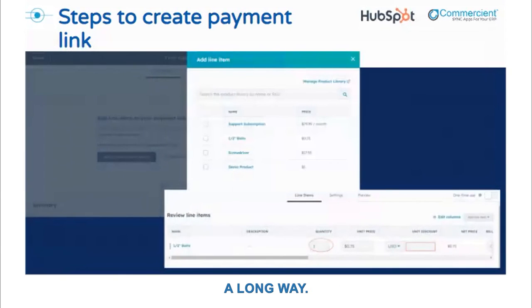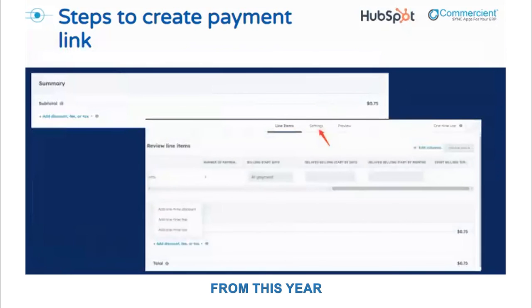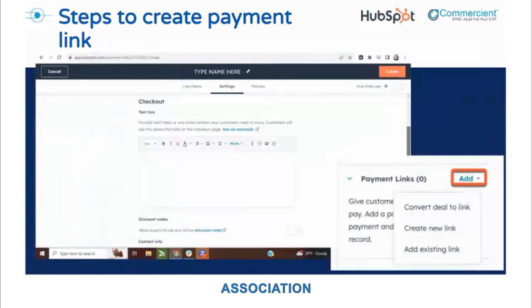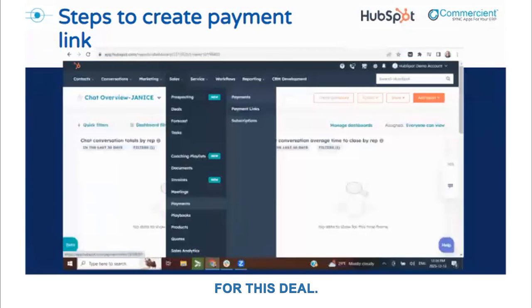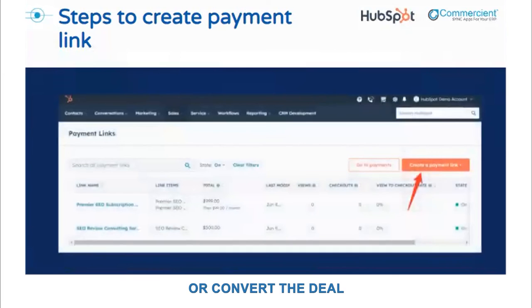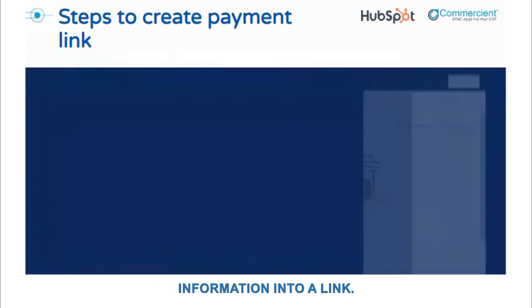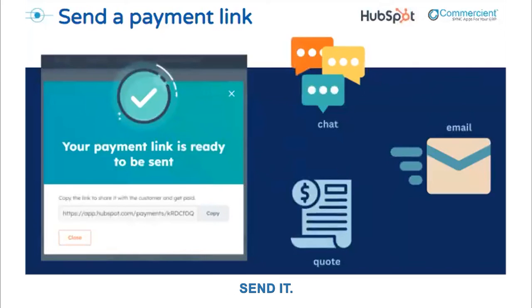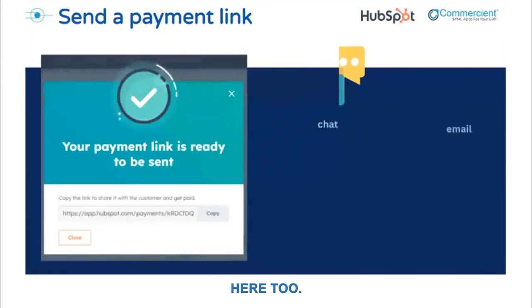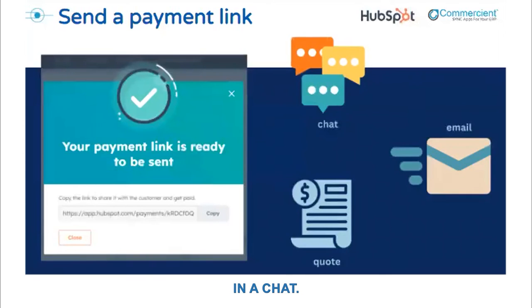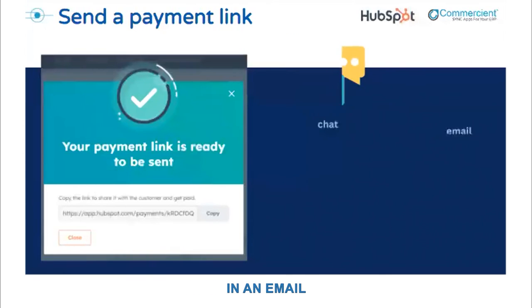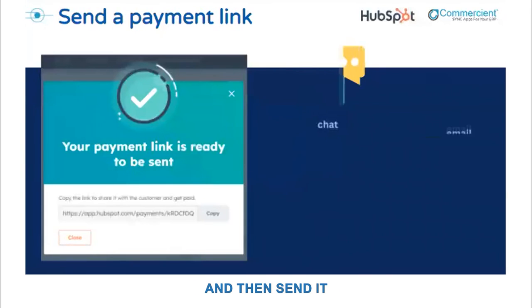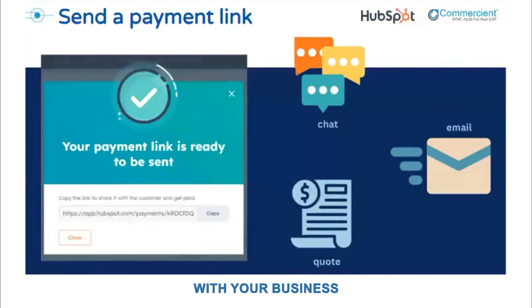This is honestly the long way. You can also create the link directly from the CRM record. Just open the record, find the payments association, and choose from options to create a new link for this deal, add an existing link, or convert the deal information into a link. Your payment link is created — now you need to send it. You can send the link as part of the quote, send it in a chat, or even embed it in an email. After you click Create, you'll see the payment link — all you need to do is copy it and send it the way that best aligns with your business process.